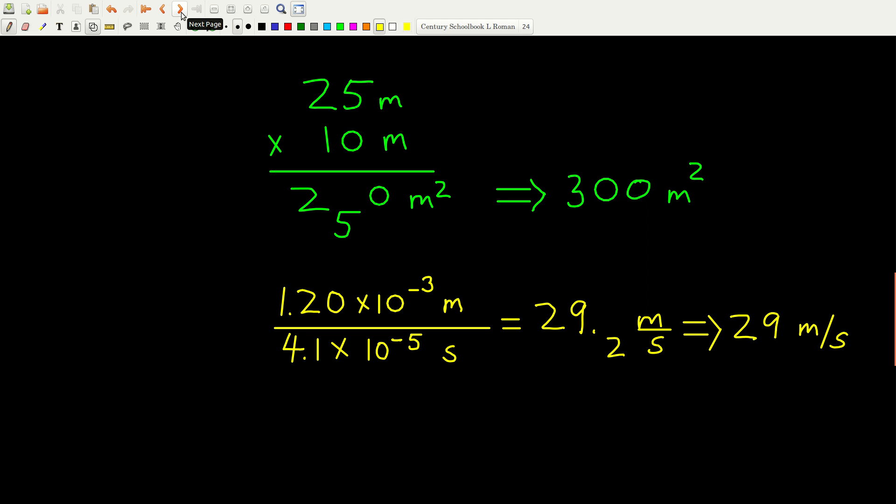When you multiply that out in your calculator, you get 250 meters squared. But this first number here has two significant figures, two and the five. The 10, because there is no written decimal point, that means that it only has one sig fig, the one. The zero doesn't count. The trailing zero does not count because there's no written decimal point. So this only has one sig fig.